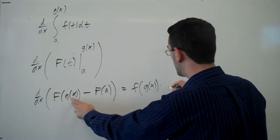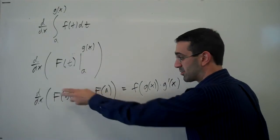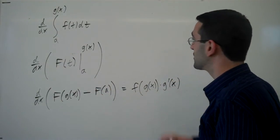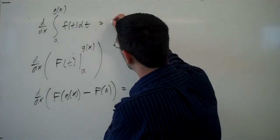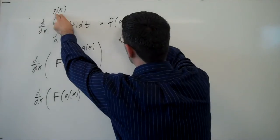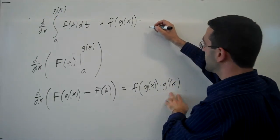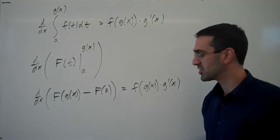Chain rule says times the derivative of the inside function. And again, the derivative of big F of a, this is a constant, so it will be zero. And so we end up with the original function evaluated at g of x, evaluated at this function, with a chain rule times the derivative of that inside function.